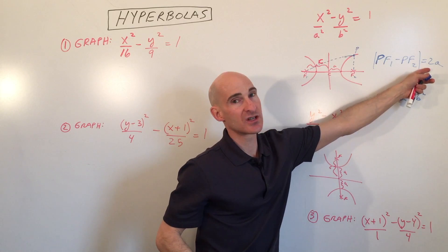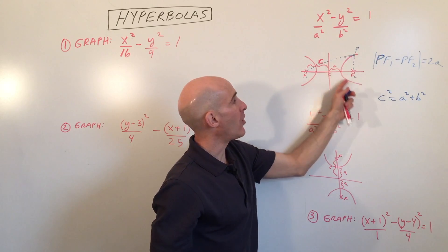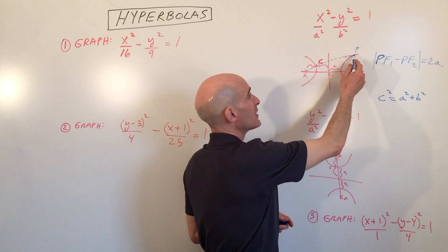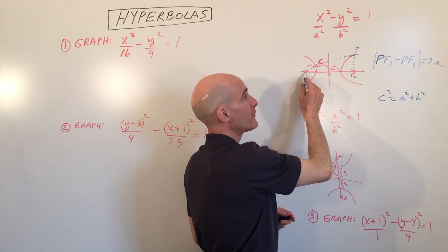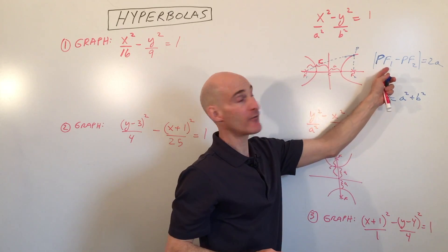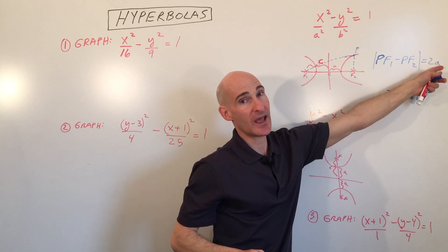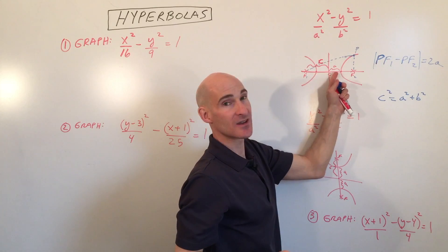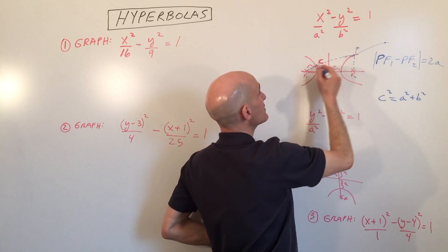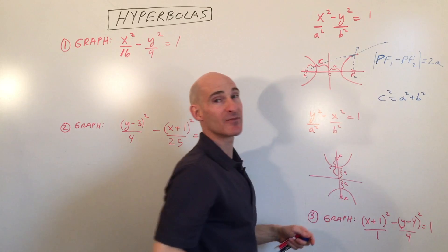Just to give you some background on what a hyperbola actually is: a hyperbola is the set of all points where, if you take any point on the hyperbola and measure the distance to one focus minus the distance to the other focus — so |PF1 - PF2| — you always get 2a, the distance between the two vertices. As you go further and further out on the hyperbola, both distances get longer, but the difference always stays the same — it's always 2a.